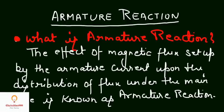What is Armature Reaction? The effect of magnetic flux set up by the armature current upon the distribution of flux under the main pole is known as Armature Reaction.